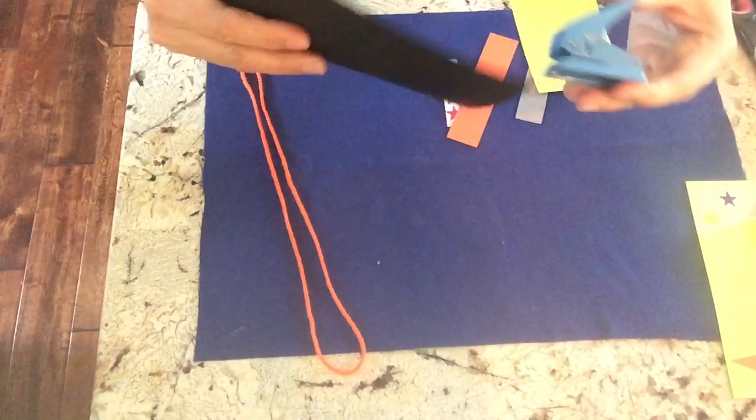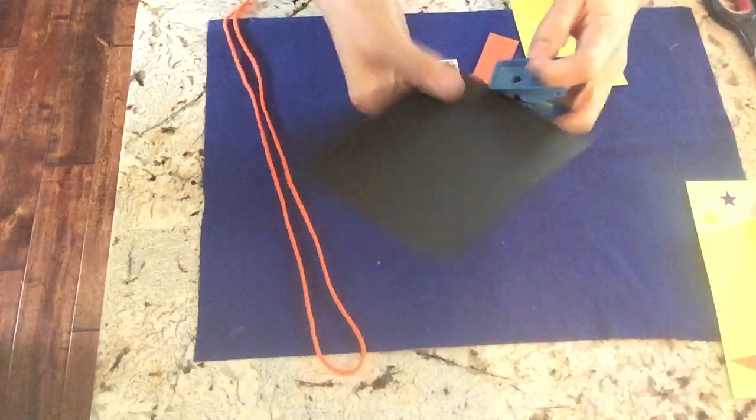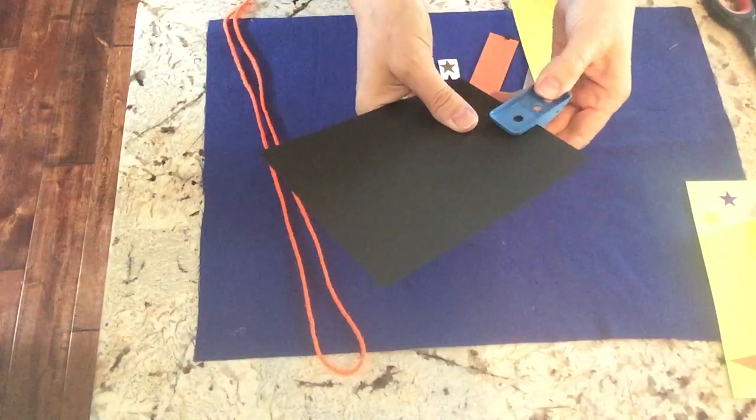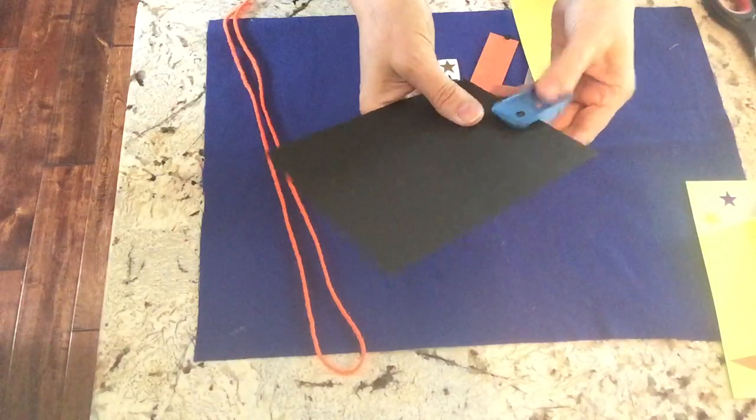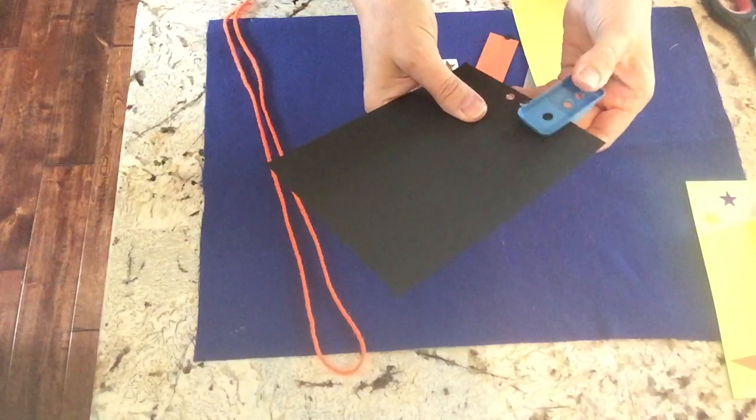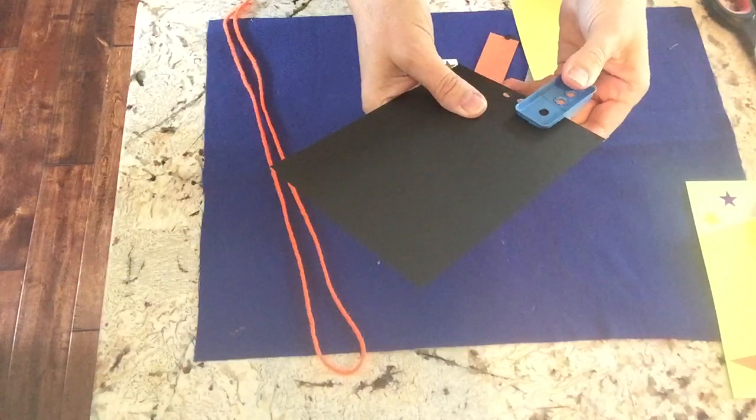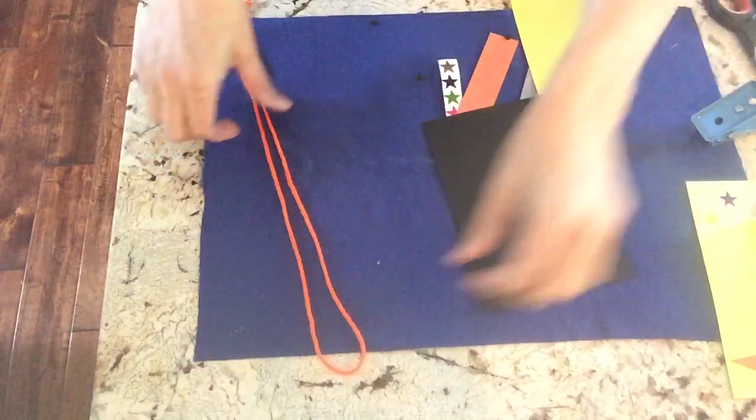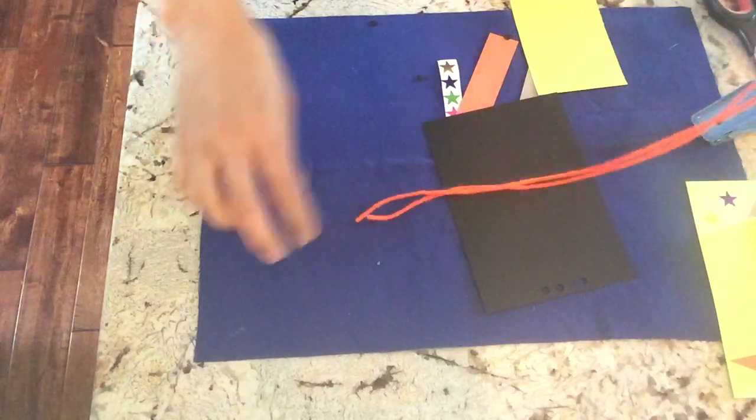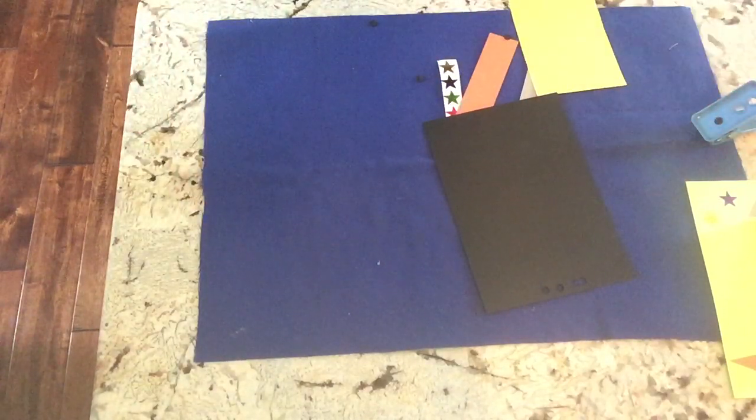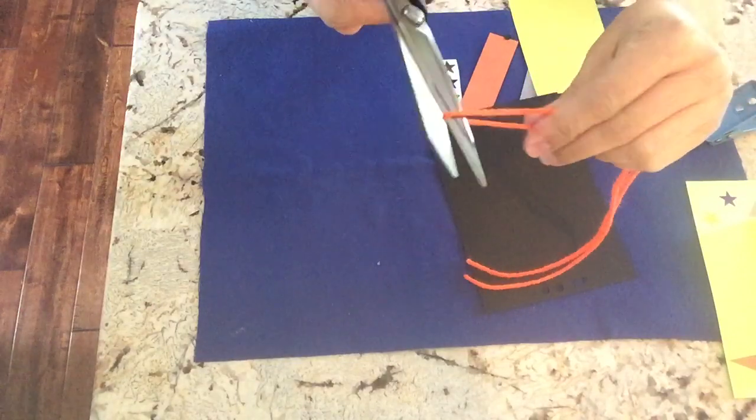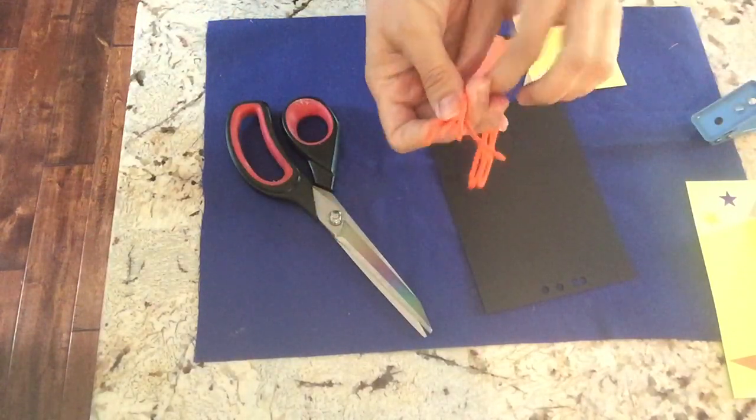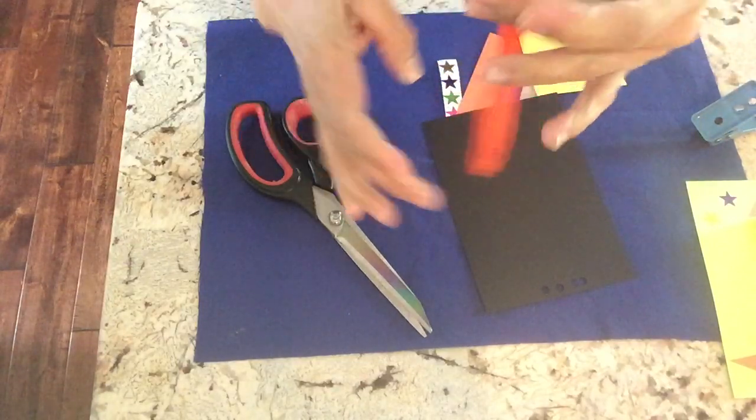So get a little hole puncher and you're gonna do four holes close to the bottom. Try to do it in the middle. There we go. Just like that on the bottom and I'm giving you a piece of yarn so I want you to take it and let's fold it in half and cut it and let's fold it in half and cut it again.